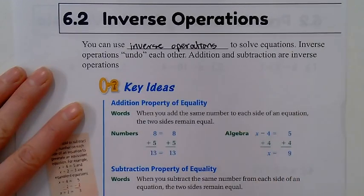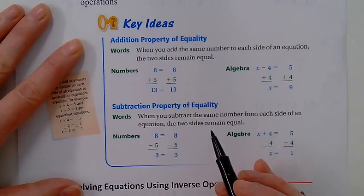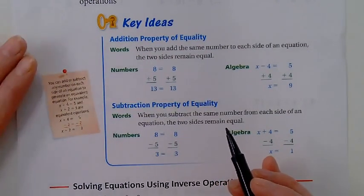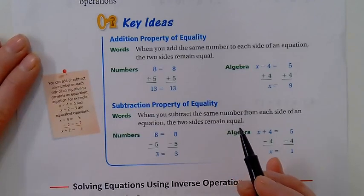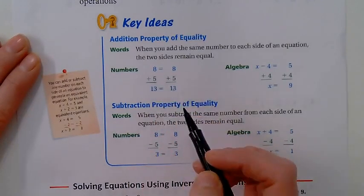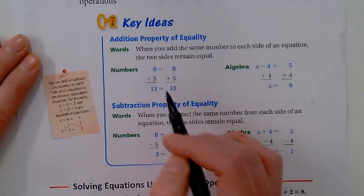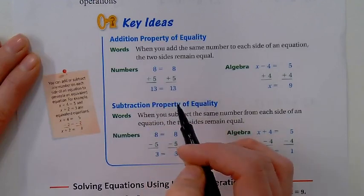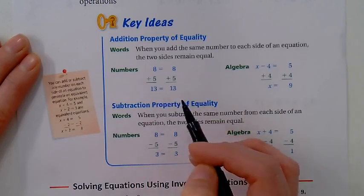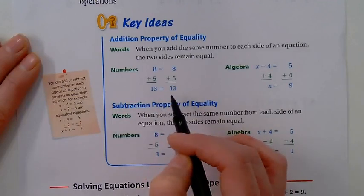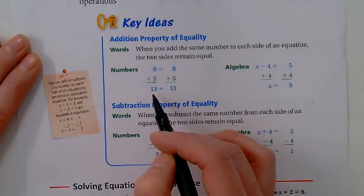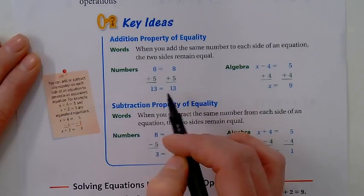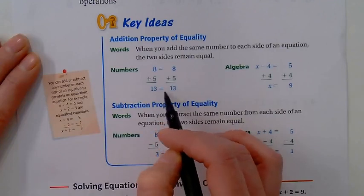All right, so let's talk about these key properties here. These are called properties of equality—ways that we can balance something. I'm trying to keep eight balanced with eight, trying to keep this side of the equal sign balanced with this side. So in addition, if I add the same thing to both sides, it's still balanced. I still have the same weight, the same amount, the same quantity on either side of my equal sign.